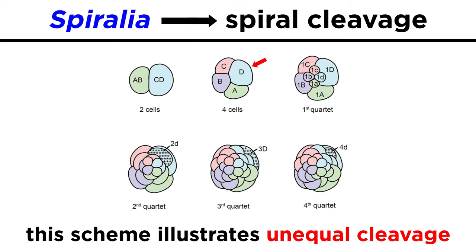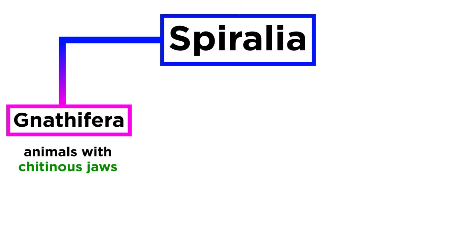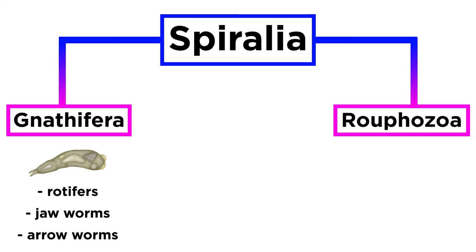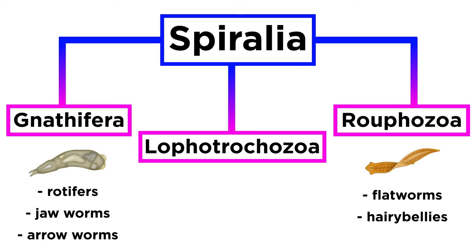Our current understanding of Spiralia indicates three major clades: Gnathifera, which includes small animals with chitinous jaws such as the rotifers, jaw worms, and arrow worms; Rouphozoa, which includes the segmented worms, molluscs, and several others.